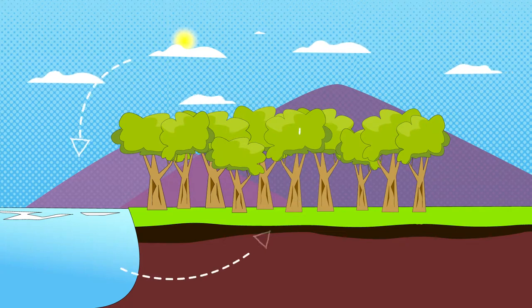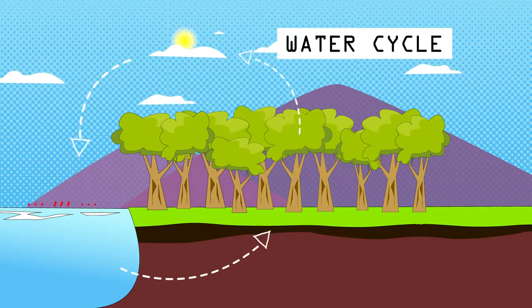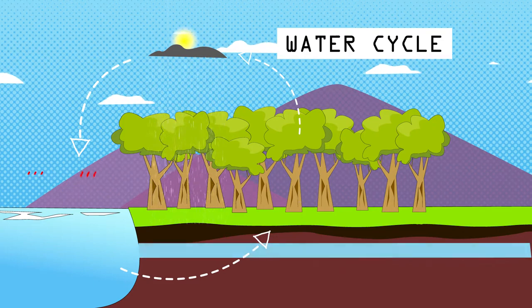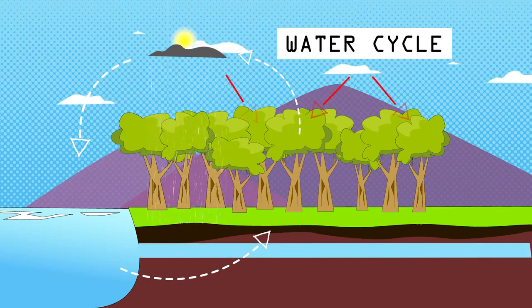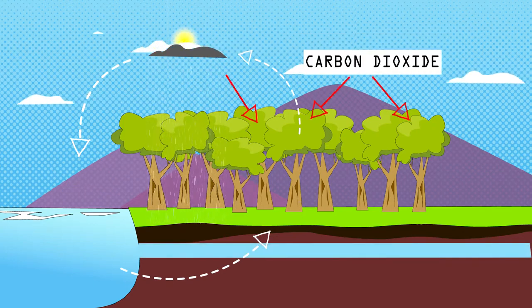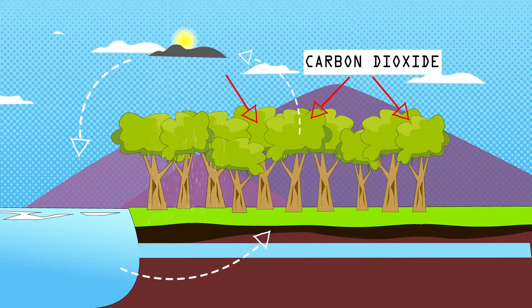Forests provide services to the planet. They are important in the water cycle, recycling fresh water across the globe. Trees are also able to take in and store carbon dioxide which helps regulate the earth's temperature.